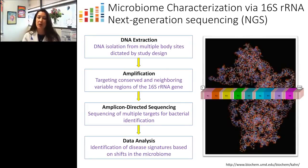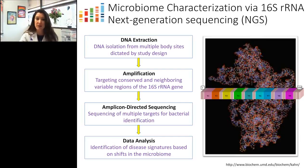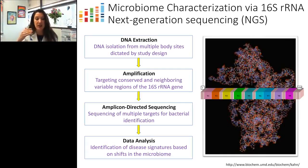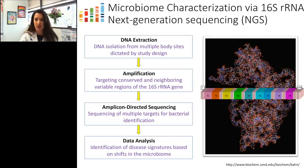To briefly describe our methodology: we first extract bacterial DNA from specimen types — most often stool for gut microbiome characterization. We then amplify the 16S rRNA gene, which is present in all bacteria. We capitalize on the alternating conserved and variable regions within that gene, using universal primers in conserved regions to amplify any bacteria in the sample and sequence directly into the variable regions to differentiate between organisms. We then perform next-generation sequencing across various platforms and conduct in-depth analysis to identify specific disease signatures.